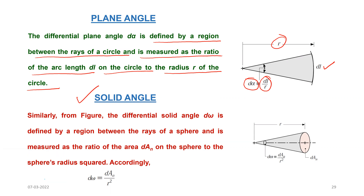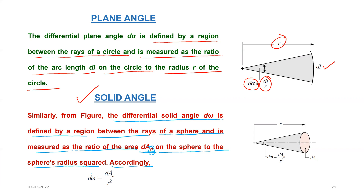The differential solid angle dΩ is defined by a region between the rays of a sphere and is measured as the ratio of the area dAn — the normal area on the sphere — to the sphere's radius squared. So dΩ is given by dAn divided by r². The direction of emission is perpendicular to this surface, dAn is the normal area, this is the center of the sphere, and this is the radius. The angle shown here is the solid angle dΩ, given by dAn divided by r².